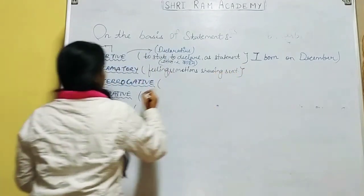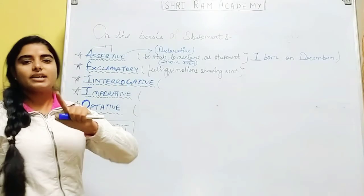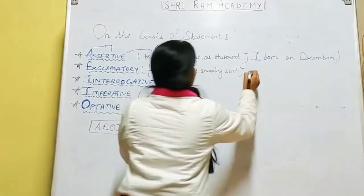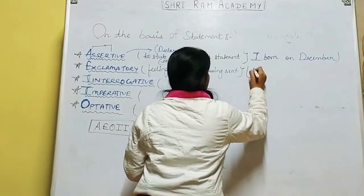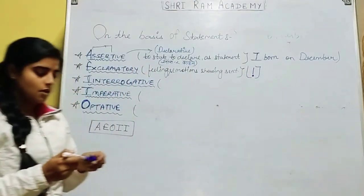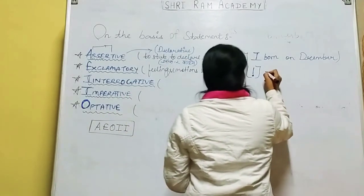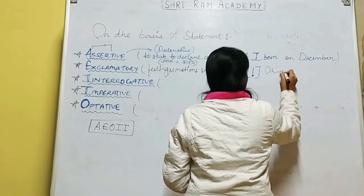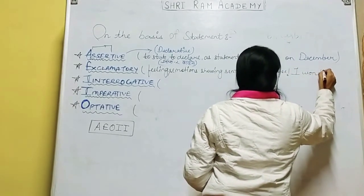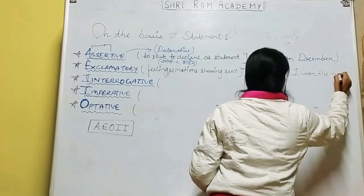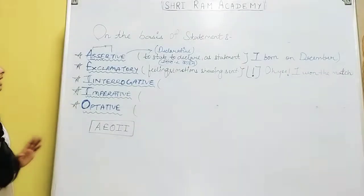यह चीज़ याद रखना — whenever you get an exclamatory sentence, you will also get an exclamation mark. So simply याद रखना कि exclamation mark है तो exclamatory sentence है. For example: 'Oh yes! I won the match!' — this has an exclamation mark, so it is an exclamatory sentence.